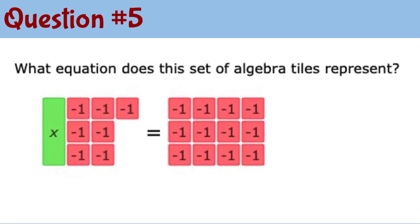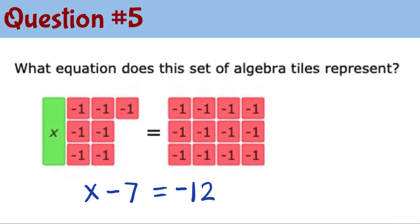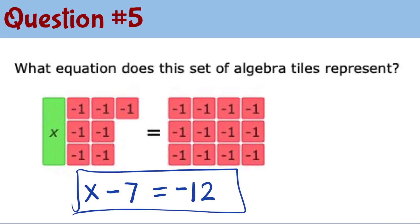Question number 5: for the left side we have only 1 x tile, and we have 7 negative tiles, so we have x minus 7. On the right side, there are 12 negative 1 tiles, so we have minus 12. Therefore, x minus 7 is equal to negative 12 as the equation for this algebra tiles.